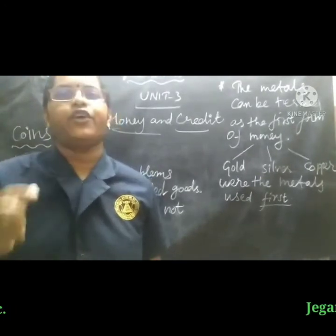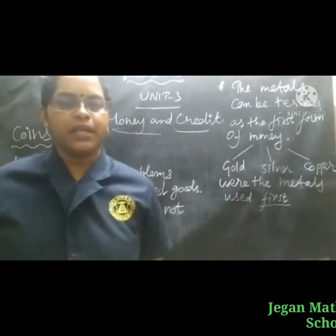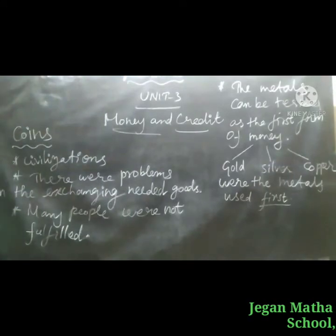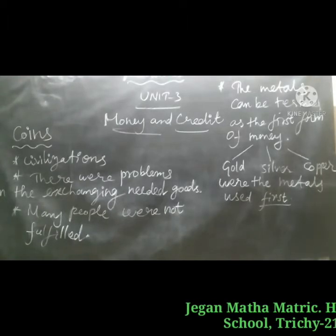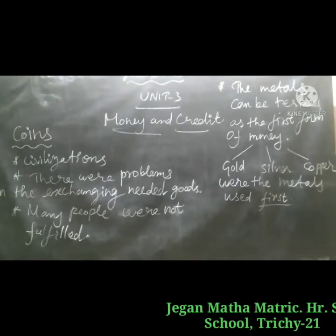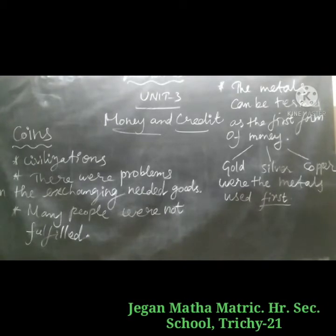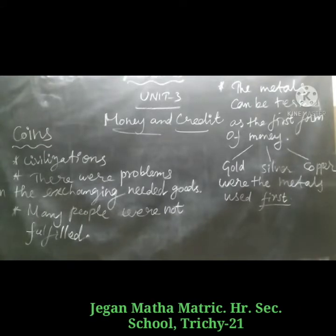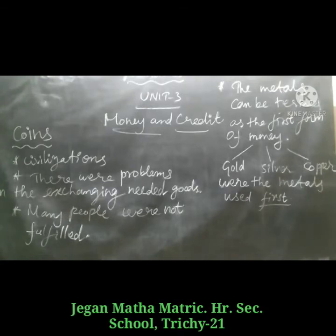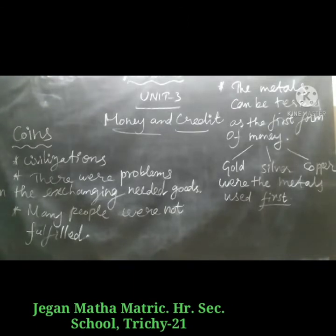Next, let us discuss the topic: Coins. After the barter system, the next stage in the evolution of money is coins. The barter system flourished wherever civilization thrived — not only within a civilization but also among civilizations. This was the initial form of international trade. During archaeological excavations in Egypt and Iraq, articles used during the Indus civilization were excavated. As years went by, issues arose from the barter system. There were problems in exchanging needed goods.